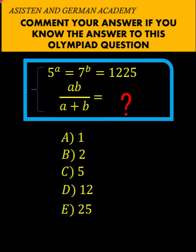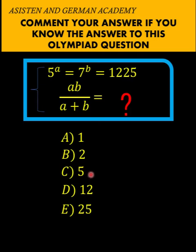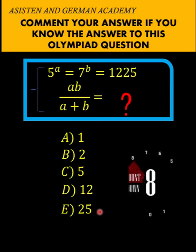Hi everyone, here is our math problem for today. We are given that 5 raised to a equals 7 raised to b equals 1225. What is the value of ab over a plus b? The options are: a) 1, b) 2, c) 5, d) 12, and e) 25. You can pause the video and see if you can solve this math olympiad question.